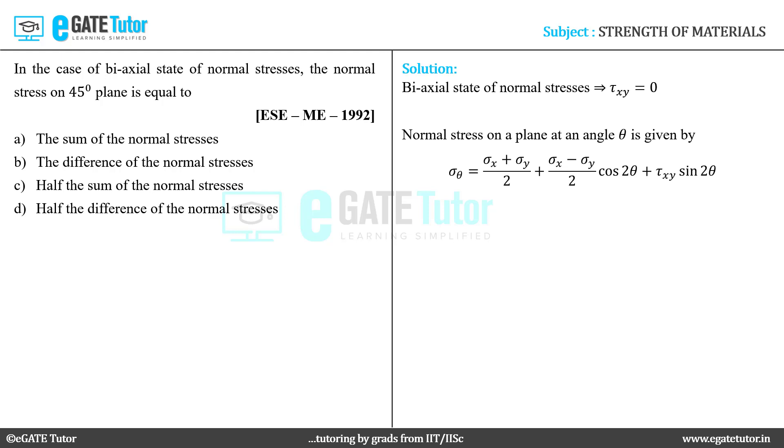sigma x plus sigma y by 2, plus sigma x minus sigma y by 2 cos 2 theta, plus tau xy sin 2 theta. We are given that theta equals 45 degrees, so when we substitute